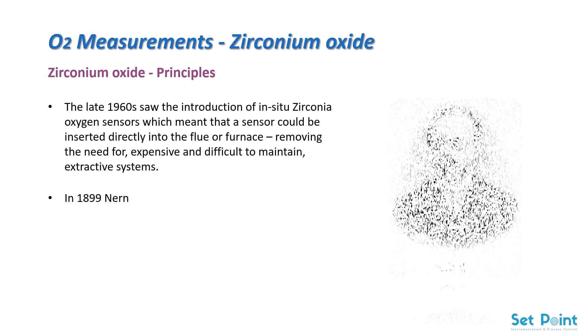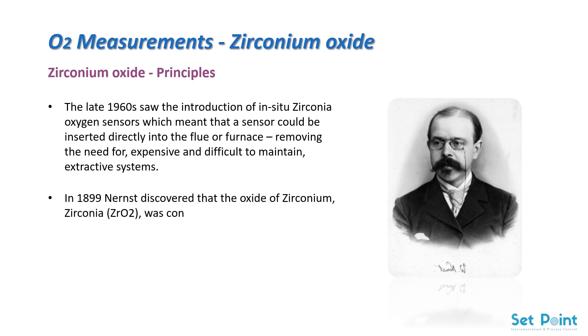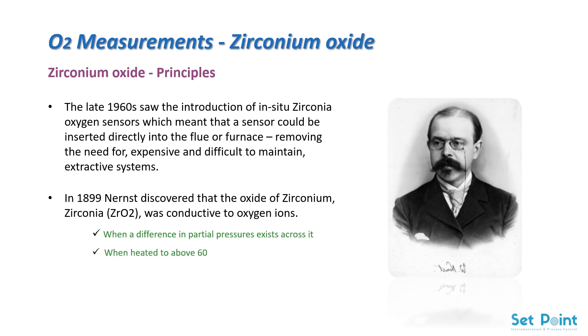In 1899, Nernst discovered that the oxide of zirconium — zirconia, ZrO2 — was conductive to oxygen ions when a difference in partial pressures exists across it, when heated to above 600°C.